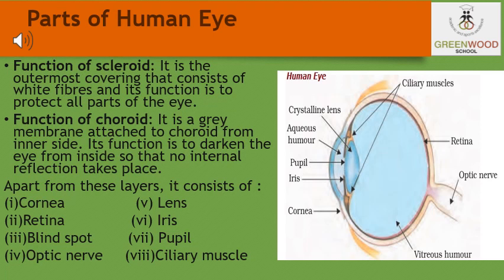Apart from these layers, the eye consists of many other parts as you can see in the diagram: the cornea, retina, blind spot, lens, iris, pupil, ciliary muscles, optic nerve, etc. These are some of the other parts apart from the scleroid and the choroid.